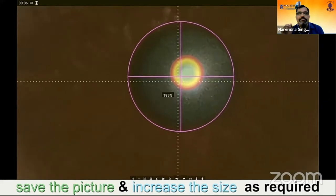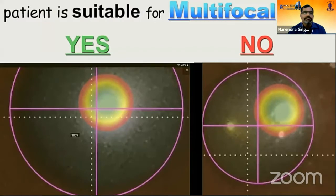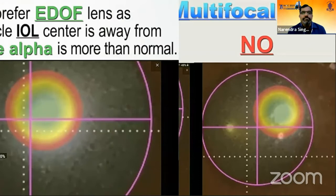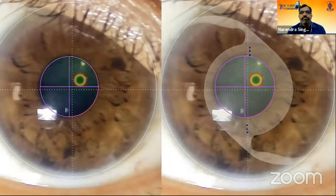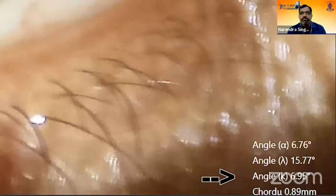In the first case, the patient is suitable for a multifocal lens, but in the second case, they are not. In the first case, it is better to prefer an extended depth of focus lens, as the optical axis — the wide circle center — is away from the visual axis, meaning Angle Alpha is more than normal. These pictures are useful to easily explain the eye condition to the patient when they are unfit for a multifocal lens. In this case, Angle Kappa is 6.95 degrees, which should be less than 5 degrees.